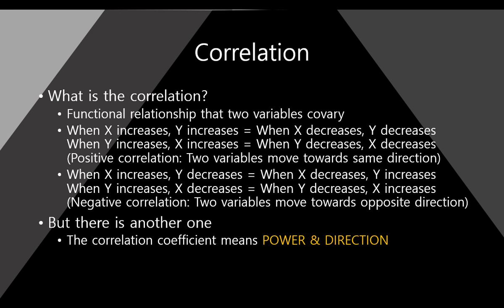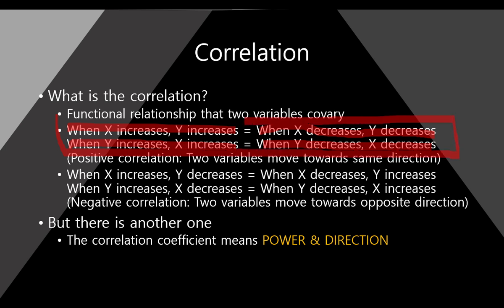The correlation is a kind of functional relationship where two variables co-vary. For example, when x increases, y increases. This concept is the same as when x decreases, y decreases. And also, it can be stated as when y increases, x increases, or when y decreases, x decreases. These four sentences are the same in correlation.